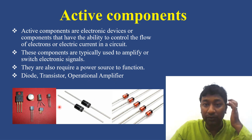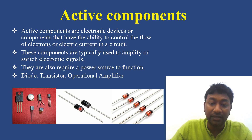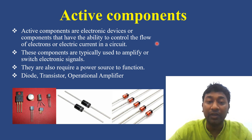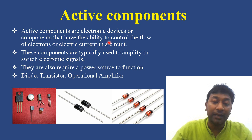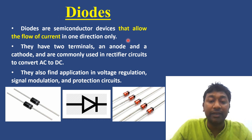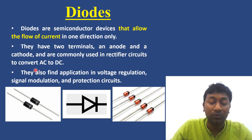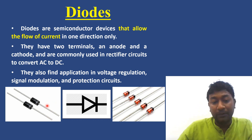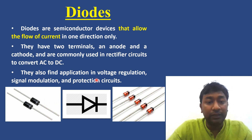Examples of active components include transistors, PN junction diodes, and Zener diodes — the Zener diode also acts as a voltage regulator. Diodes are semiconductor devices that allow the flow of current in one direction. They have two terminals: an anode and a cathode, and are commonly used in rectifier circuits to convert AC to DC. They also find applications in voltage regulation, signal modulation, and protection. Different types of diodes include PN junction diodes, IR diodes, and Schottky diodes, and the details will be discussed in Unit 4.